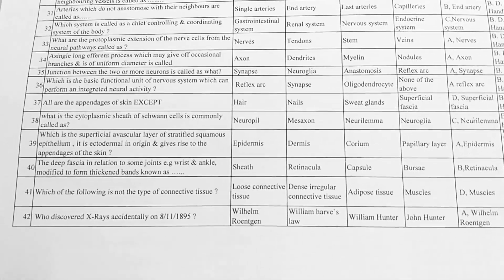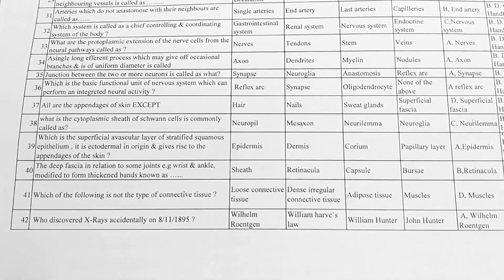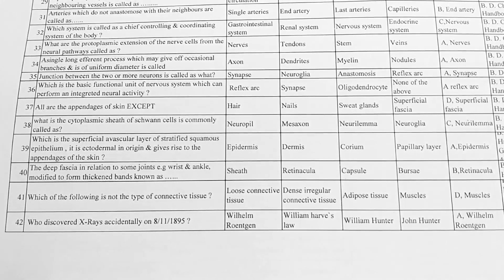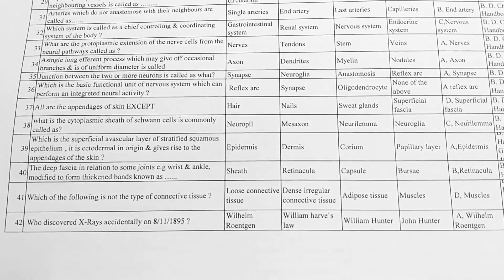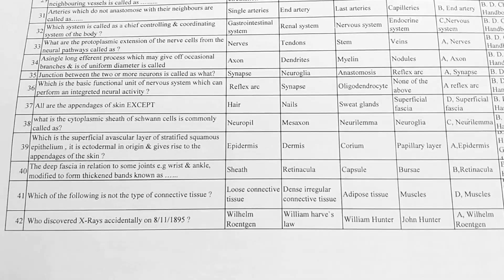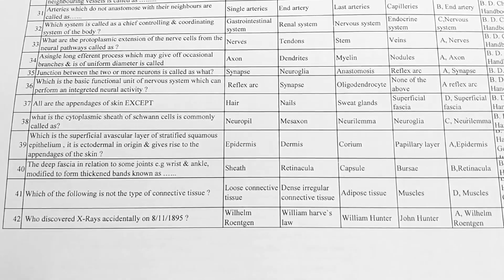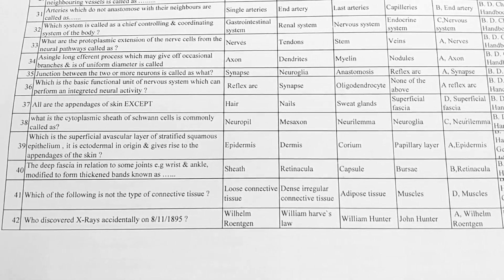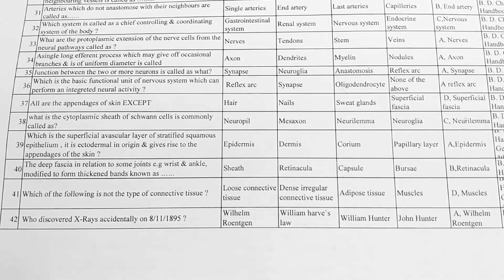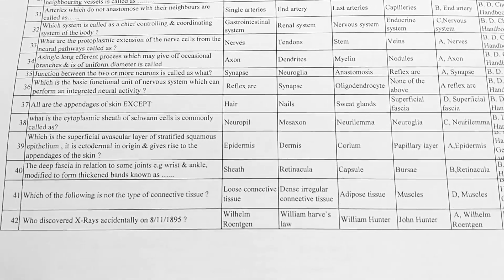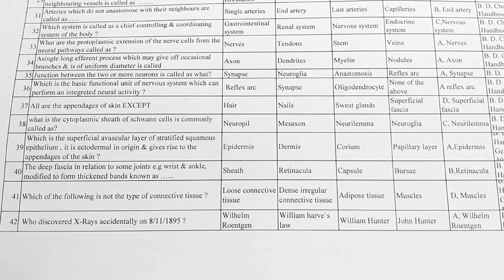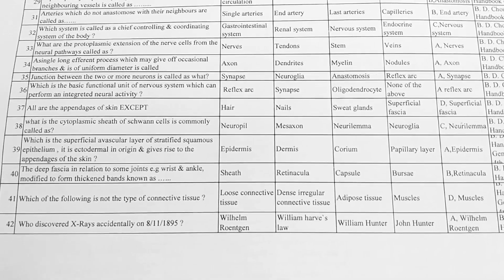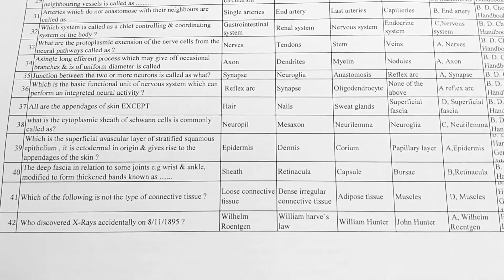Next, which is the superficial avascular layer of stratified squamous epithelium, ectodermal in origin, and gives rise to the appendages of skin? Options: A. epidermis, B. dermis, C. corium, D. papillary layer. Option A is correct, epidermis.